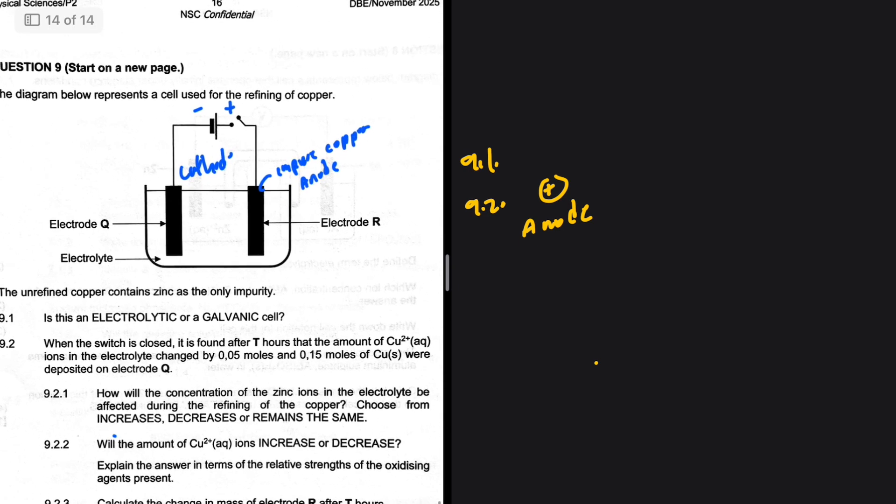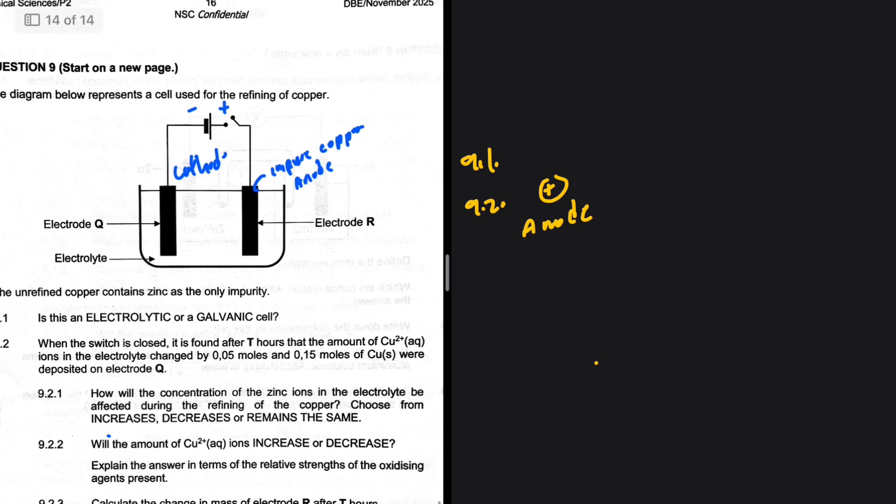The question states: when the switch is closed, it is found that after t hours the amount of copper 2+ ions in the electrolyte changed by 0.05 moles, and 0.15 moles of copper were deposited on electrode Q.